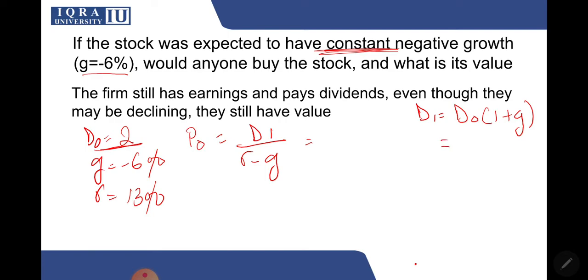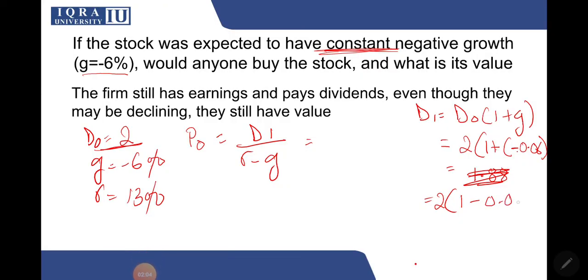This is the formula to do that. Now d naught is 2 and now the growth rate is negative so minus 6%, 0.06. You will get 1.88. Plus into minus will still be minus. I will show the step to you so there's no confusion. 1 minus 0.06, so if you solve this, this will be 1.88.